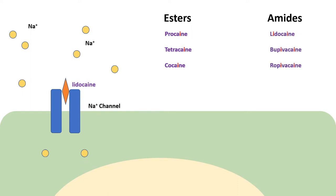When esters are metabolized, they can produce an intermediate called para-aminobenzoic acid, or PABA, which can cause an allergic reaction.